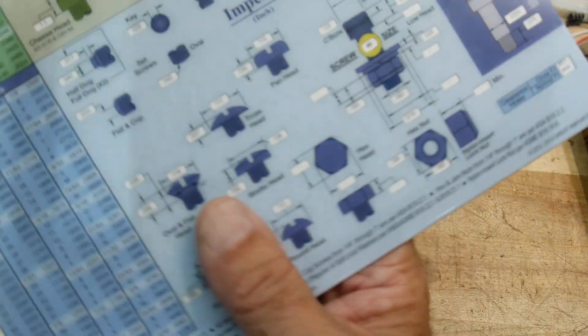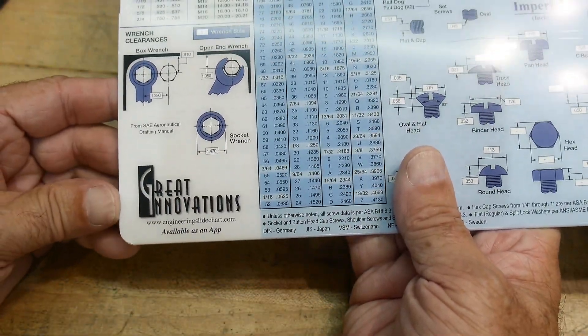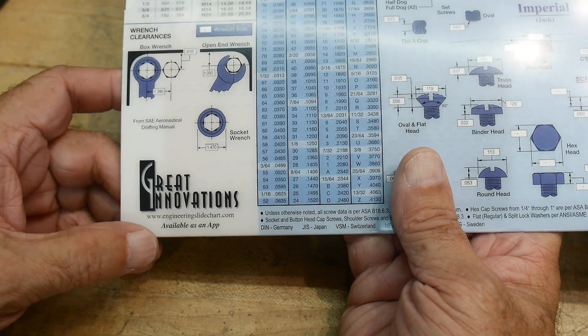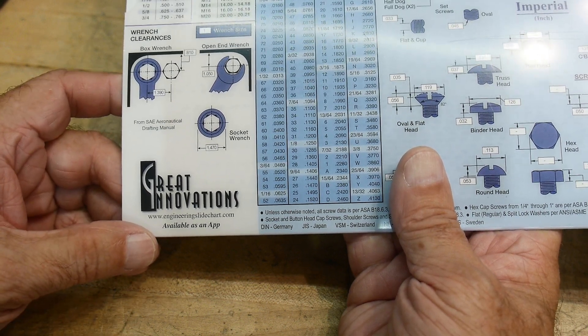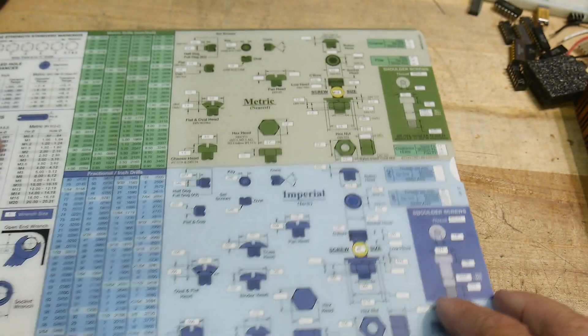Some formulas and statistics. Yeah, it's just a nice chart. I think it's about 30 bucks. And once again, great innovations. www.engineeringslidechart.com. Also available as an app, so check that out. Anyway, looks like fun.